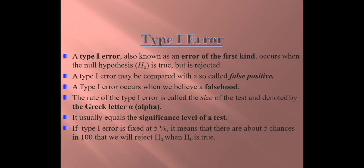The rate of the Type 1 error is called the size of the test and is denoted by the Greek letter alpha. So Type 1 error is denoted by the Greek letter alpha.